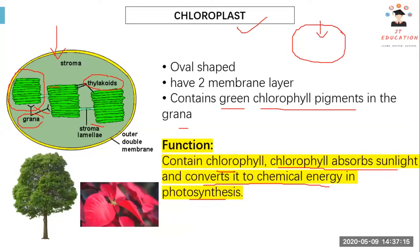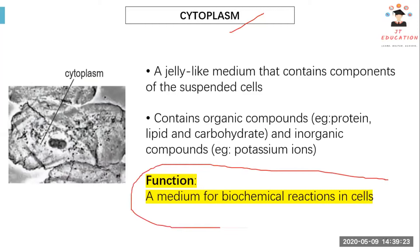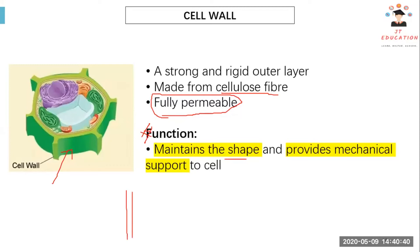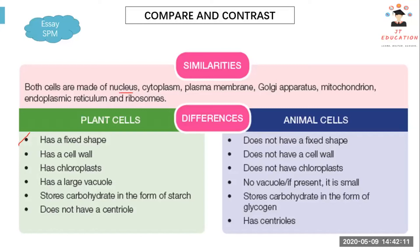The cytoplasm is the medium for biochemical reactions that occur in the cell. The cell wall, found in plant cells, is fully permeable and made of cellulose fibers. It is a strong structure that maintains the shape of the cell and provides mechanical support. Without a cell wall, the plant would collapse and not stand upright.